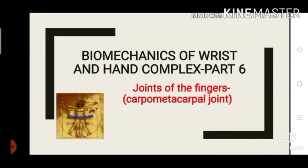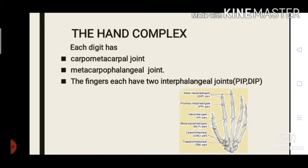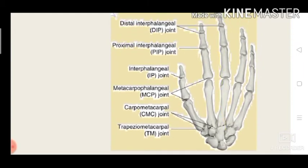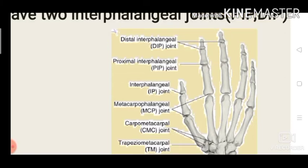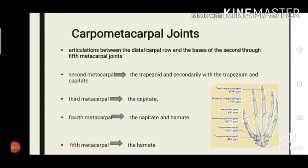Welcome to Human BE. In this video we are going to discuss the carpometacarpal joint. Our hand consists of five digits — four fingers and thumb. We will discuss the structure of thumb in another video. Each digit has a carpometacarpal joint, metacarpophalangeal joint, and the fingers have two interphalangeal joints: the proximal interphalangeal joint and distal interphalangeal joint.